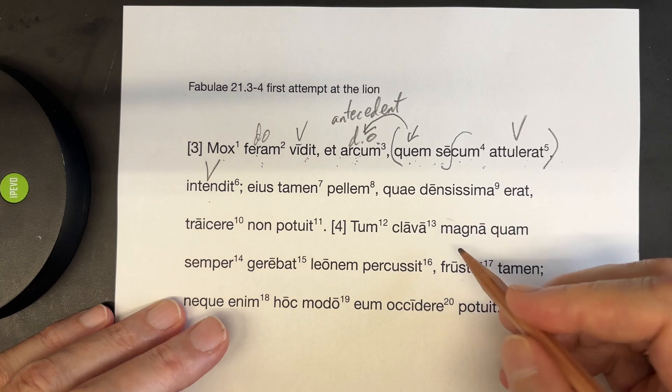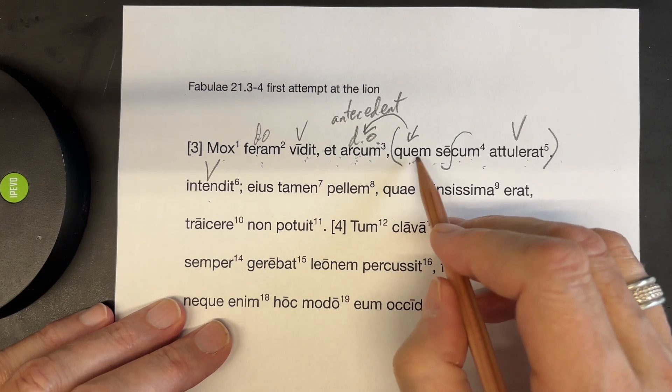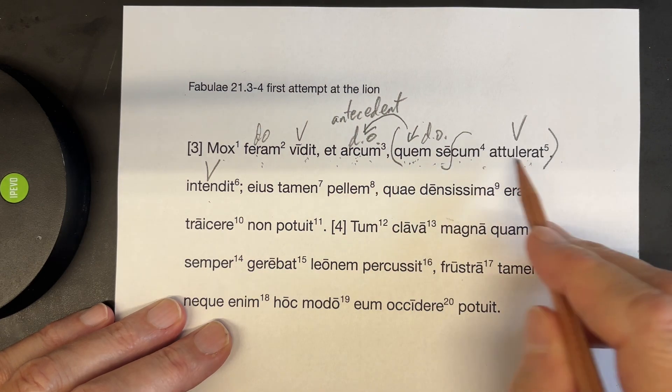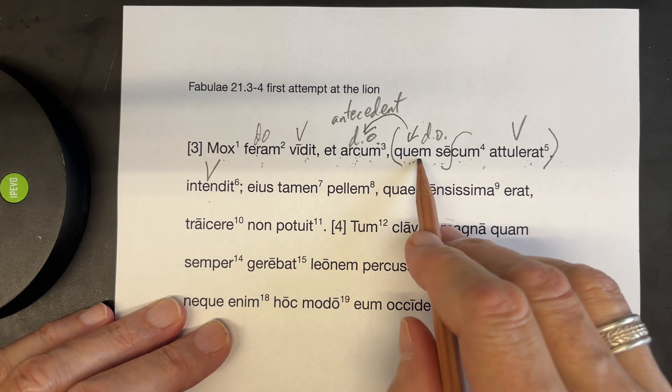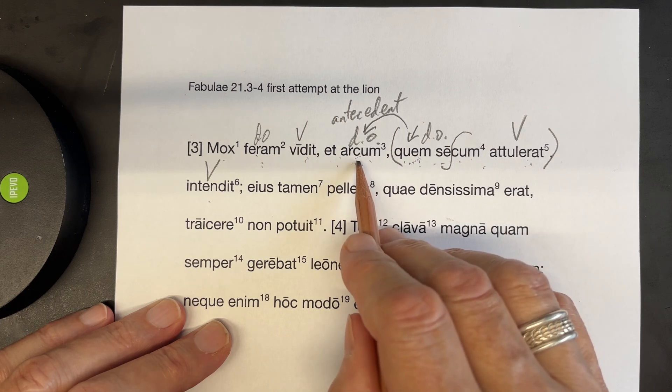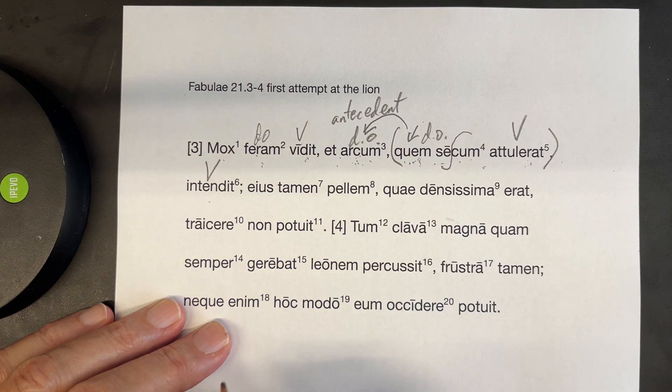So that is the antecedent. And it's the direct object in its own clause, which he had brought. So it's accusative. However, it is referring to Arkham, so it is singular and masculine. That's how relative pronouns work.